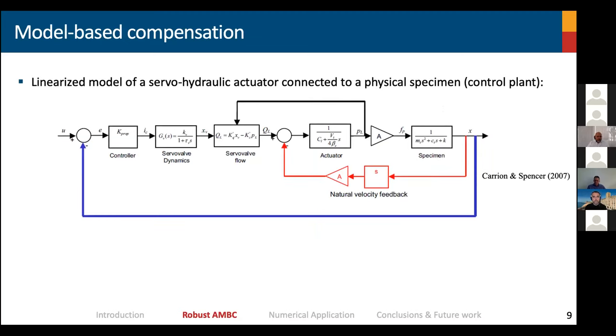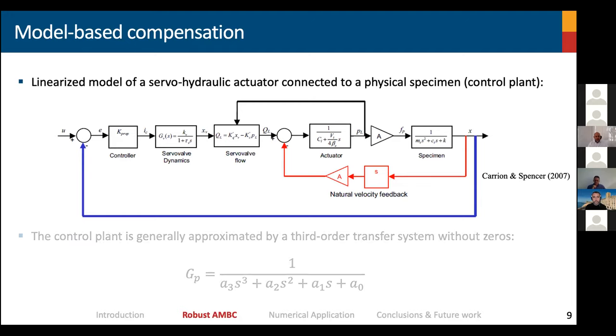Starting from model-based compensation, we usually get a linearized model of our control plan. Our control plan usually is the servo-hydraulic actuator connected to a physical specimen, and we incorporate into our model control-structure interaction. We approximate this model with a third order transfer system without zeros. So a very simple linearized model of our loading equipment with a specimen attached could be, for instance, this transfer function.